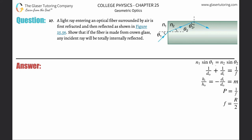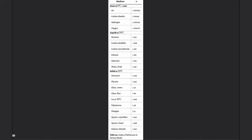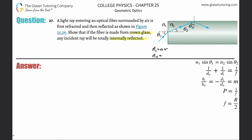Problem 27: a light ray entering an optical fiber surrounded by air is first refracted and then reflected. We need to show that if the fiber is made from crown glass, any incident ray will be totally internally reflected. The ray comes from air, so n1 is air (≈1) and n2 is crown glass, which from the table is 1.52.